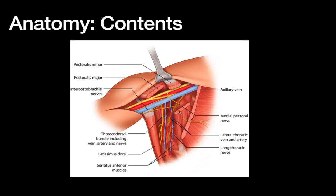First and least important are the intercostal brachial nerves — the only nerves that really run medial to lateral. These are often taken in this dissection. While we generally don't want to take nerves, dividing the intercostal brachial nerves is not a big deal; they just cause a little bit of numbness to a small area of skin on the arm.